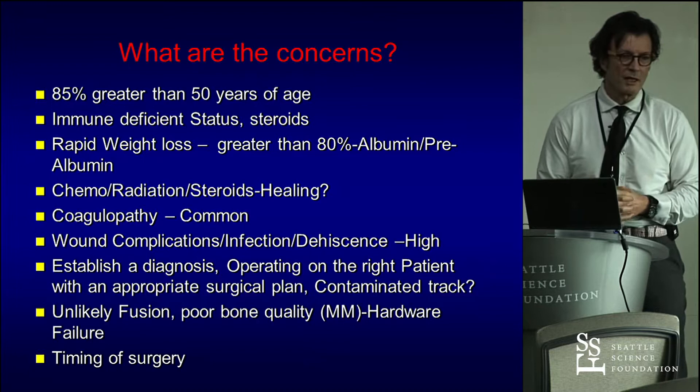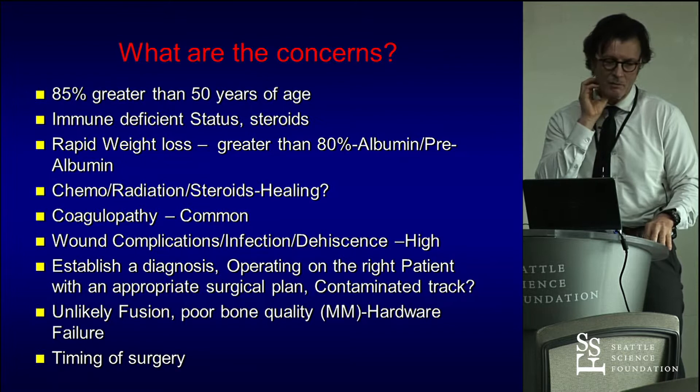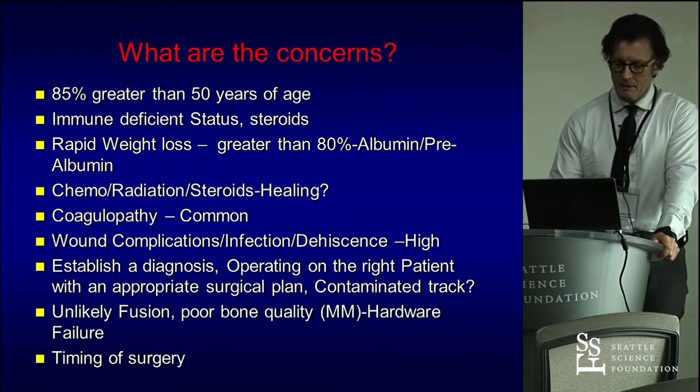These patients are unlikely to fuse — unlike the regular trauma or infection population where we pack bone and hope for fusion. It's rare to get fusions in cancer patients. Chemo and radiation work against fusion. Poor bone quality is a concern. There are many issues to think about regarding hardware failure. And the last concern is timing of surgery — when is a good time to operate?